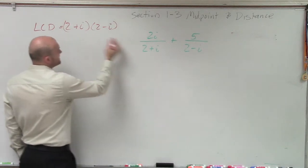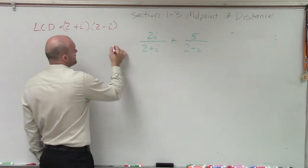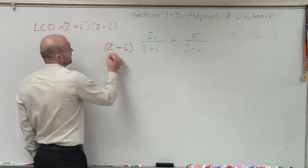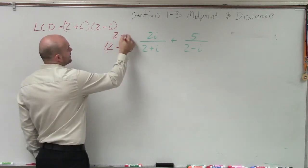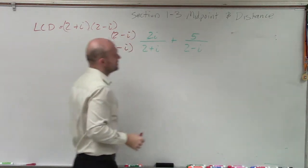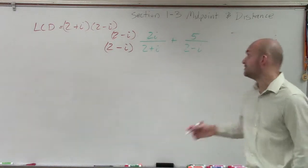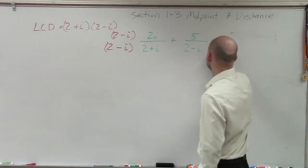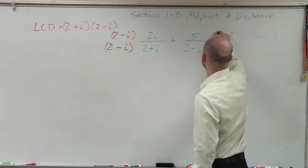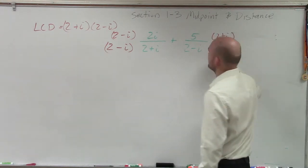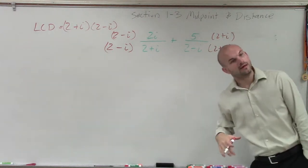To get (2+i) to my LCD, I need to multiply it by (2-i). I need to multiply it on the top and the bottom. Over here, to get my LCD, I need to make sure I multiply it by (2+i). And again, to keep equivalent fractions, you need to make sure you multiply it on the top and the bottom.